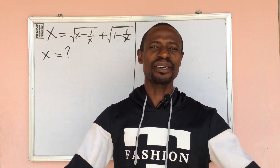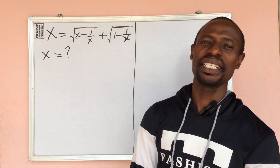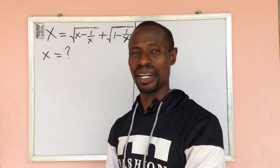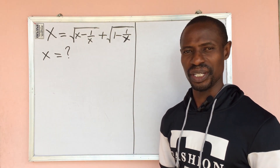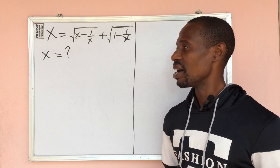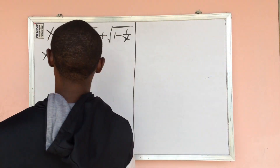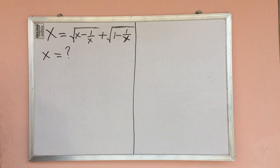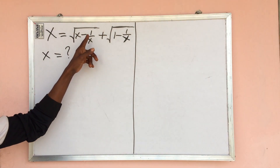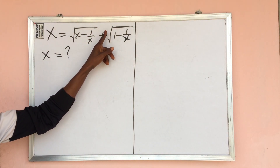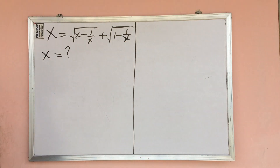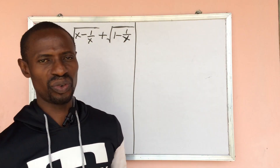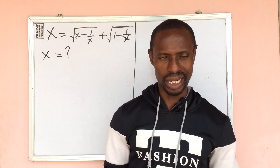Welcome to Online Mass TV, my name is Jake, and today we have a challenging radical equation. The question says: x equals the square root of x minus 1 all over x, plus the square root of 1 minus 1 all over x. What would be the value of x?